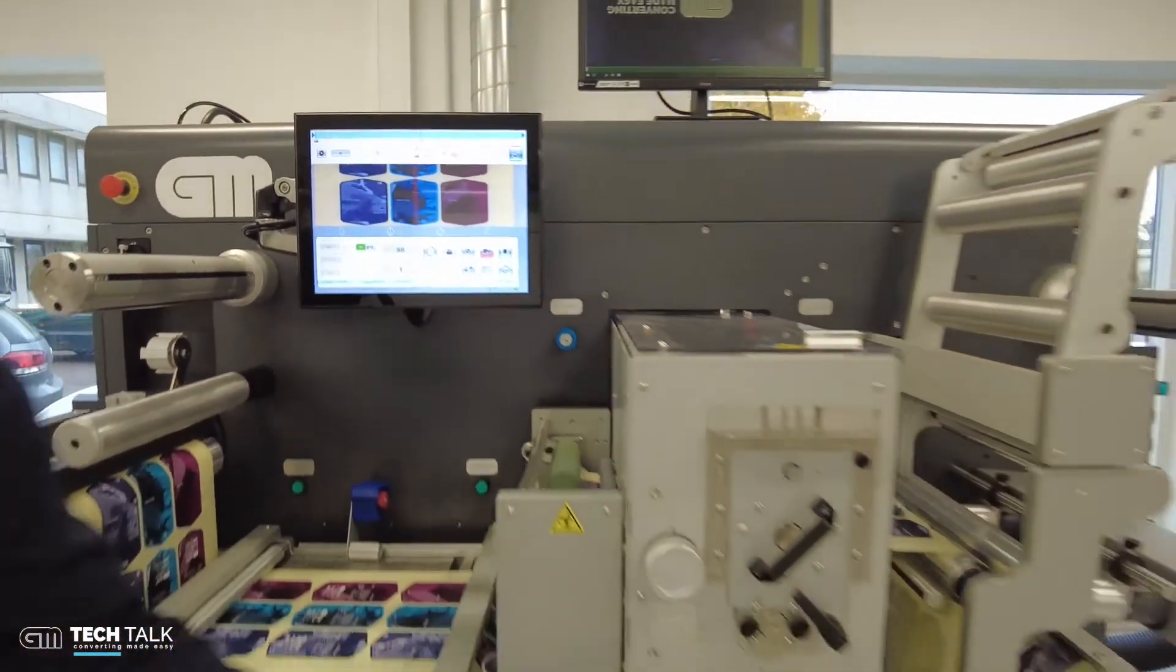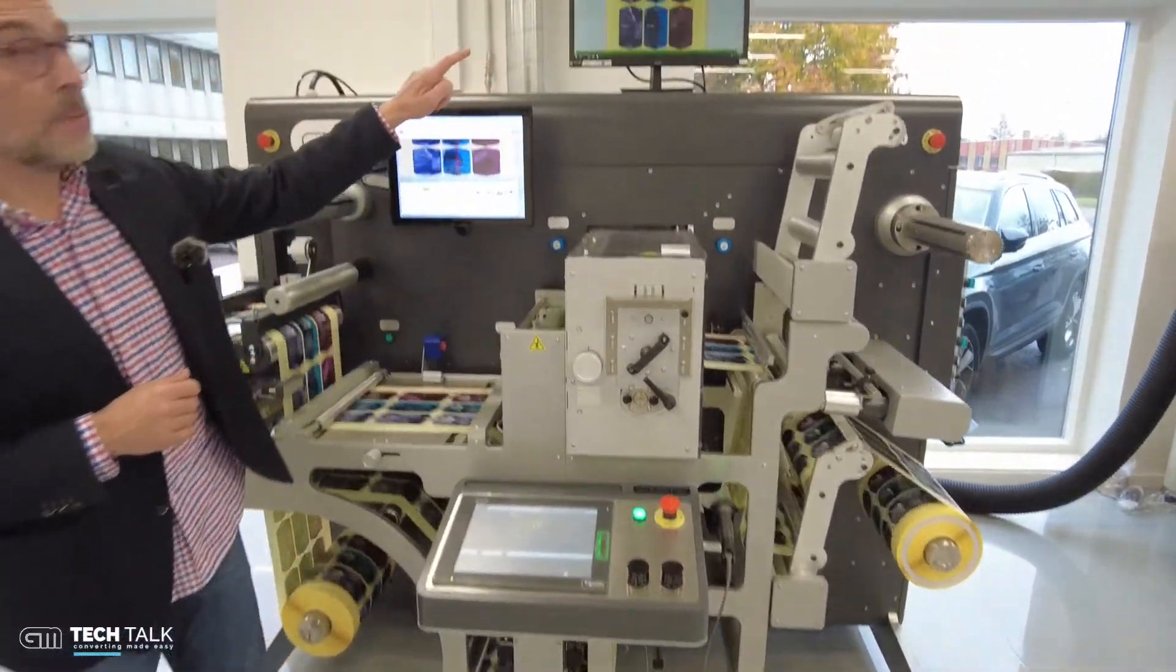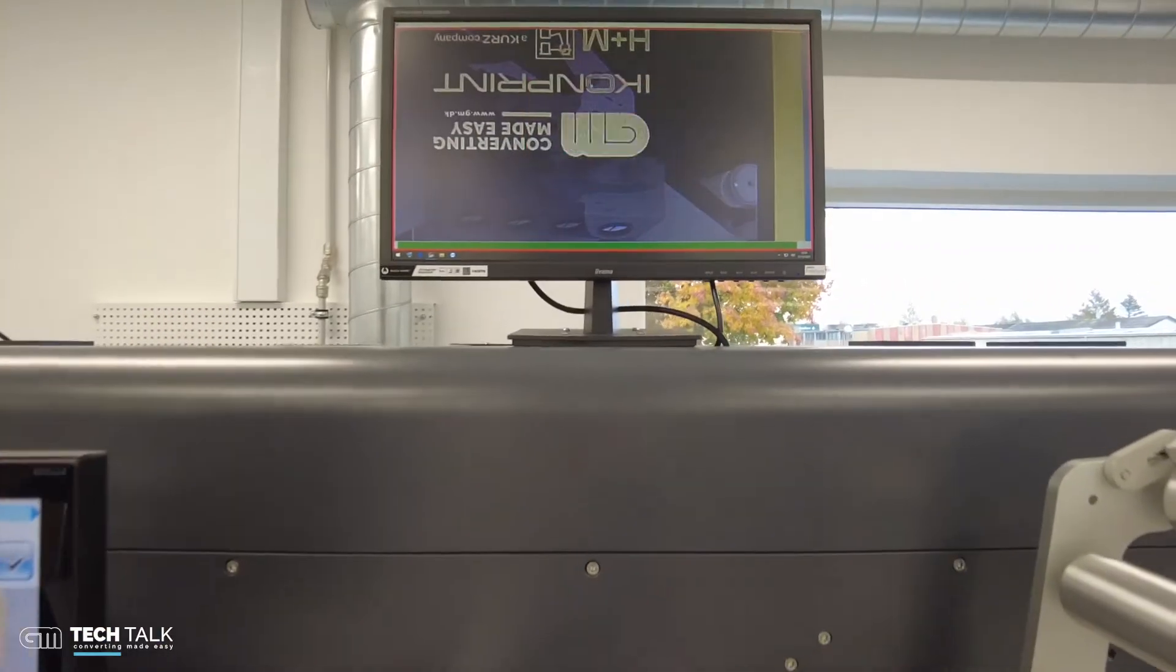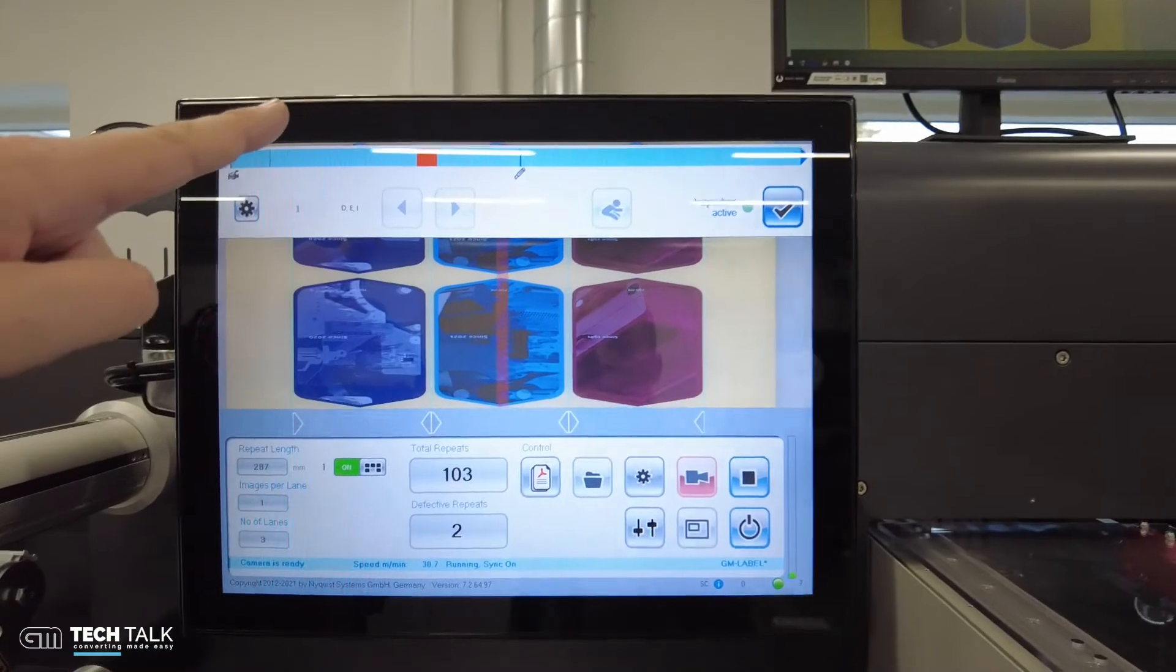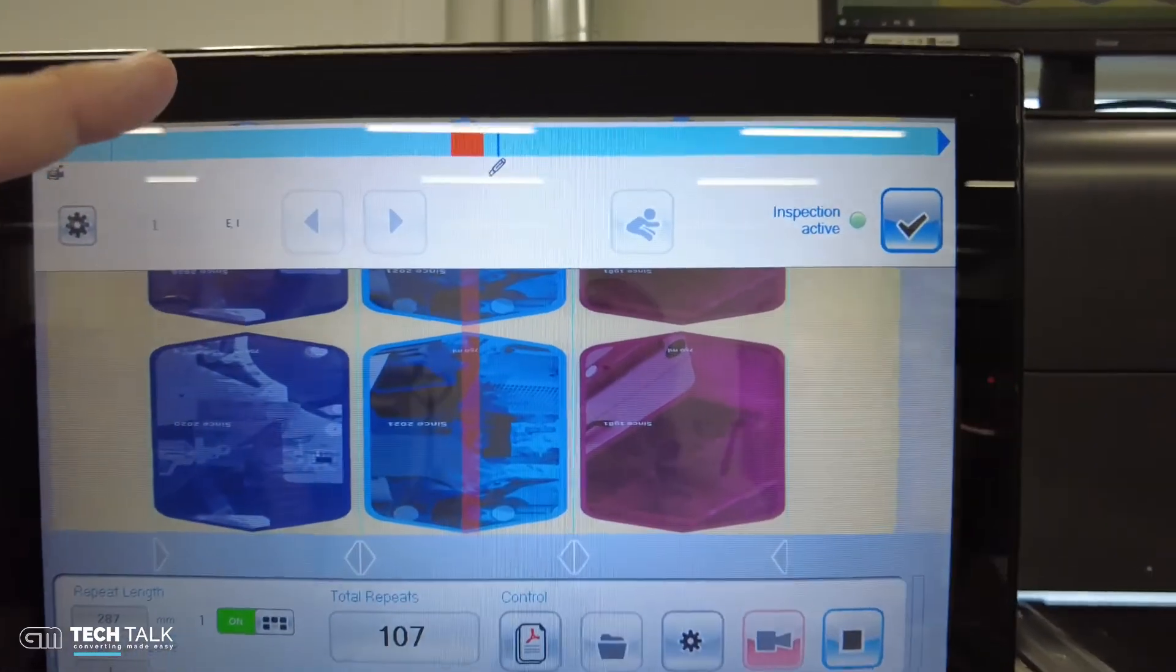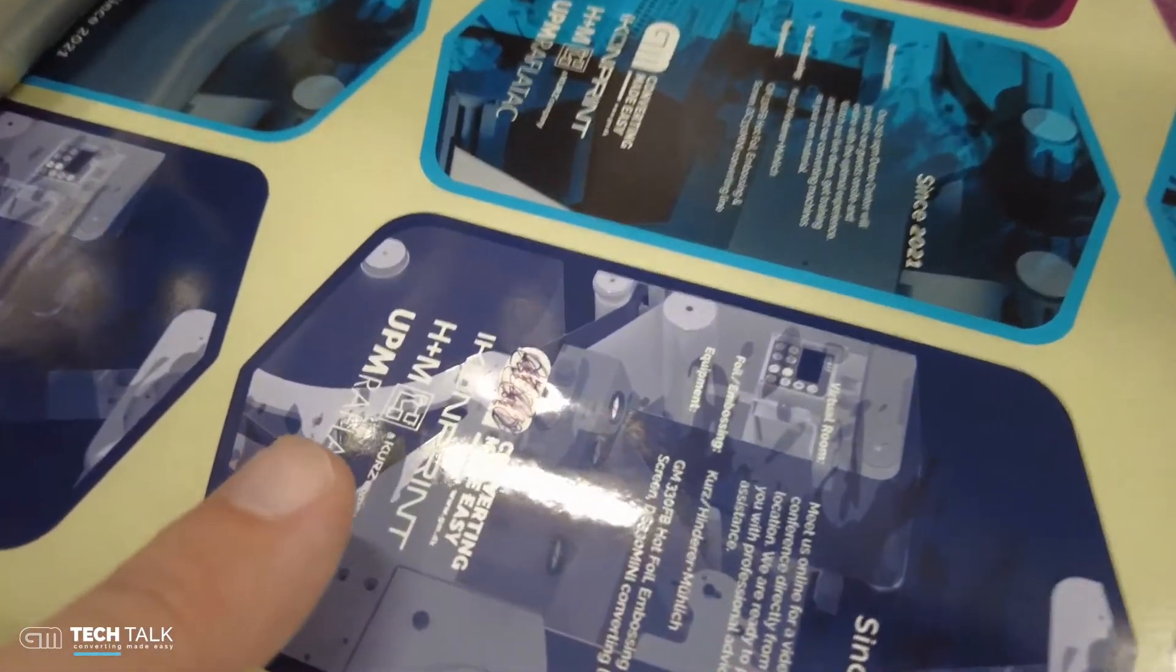We start the machine and as soon as the system finds a defect you will see it on the main screen like here. We will show it on the operator interface and show the placement cue, and we will stop the machine at the location which was predefined by the operator so that the operator can remove the defect label.